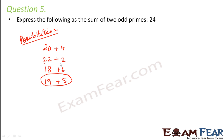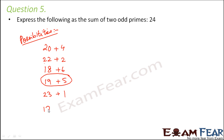Similarly, 22 plus 2 — both of these are even numbers. If you increase 22 by 1 it becomes 23, which is a prime and odd number. But since you are increasing 22, you have to decrease 2, that means it becomes 23 plus 1. But 1 is not a prime number, therefore 23 plus 1 would not be your answer. Let us look at some other combination.